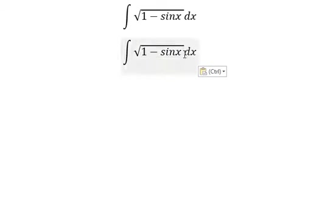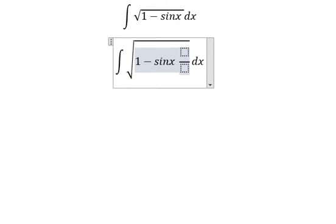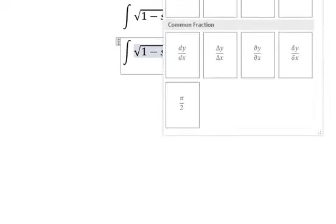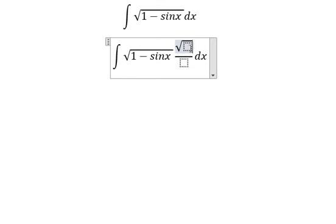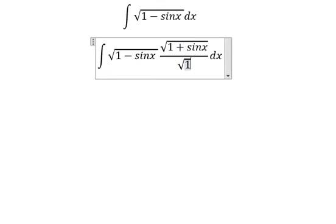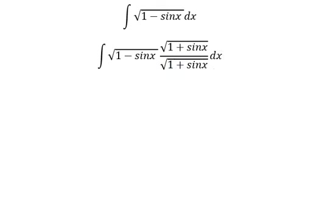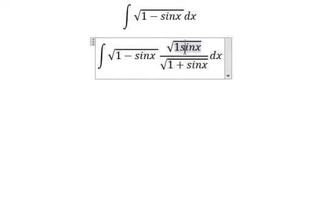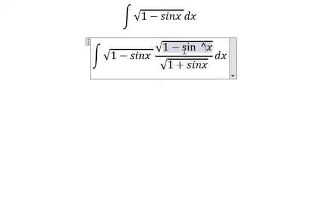In this situation, we will multiply about square root 1 plus sine x in the numerator and denominator. 1 minus sine x multiply 1 plus sine x. So inside the square root, we will go about 1 minus sine x to the power of 2.